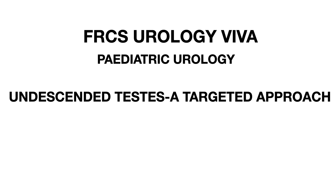When parents ask why the testis is not in the scrotum, explain the embryology: descent is under hormonal and other factors. The significance is that if the first phase fails, the testis remains intra-abdominal; if the second phase fails, it remains between the deep inguinal ring and the scrotum. Importantly, you must correct for gestational age in premature and low birth weight babies before diagnosing undescended testis and planning treatment.